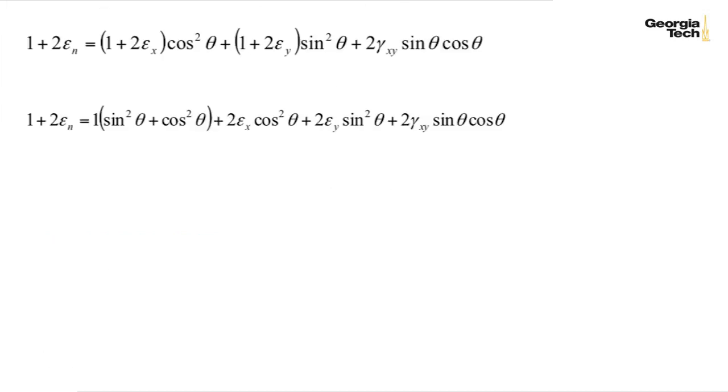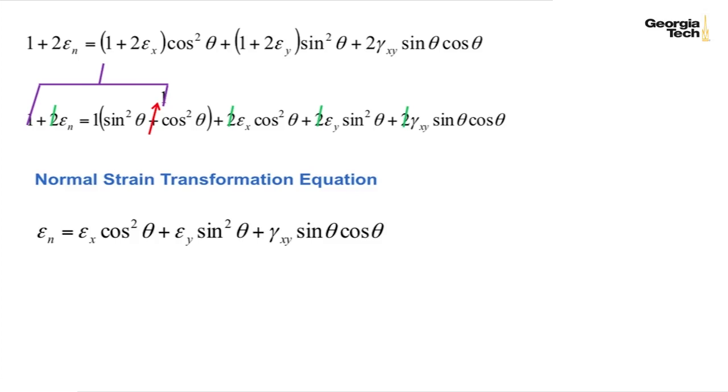And so here's that result shown again. We see that we have a sine. I've rearranged it so that I have combined terms. I have a sine squared plus a cosine squared, which is equal to one. So one cancels with one. I can cancel two in every one of my terms. And I end up with now, finally, the normal strain transformation equation.